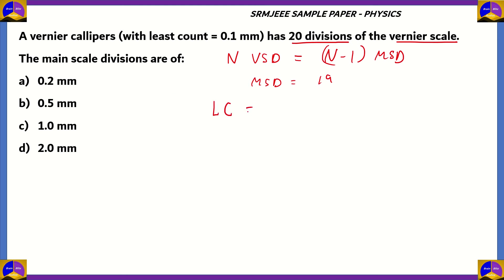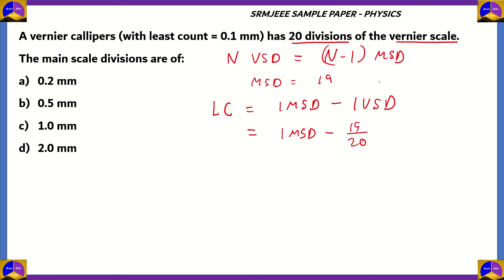The least count (LC) equals 1 MSD minus 1 VSD — that is, one main scale division minus one vernier scale division. Since 19 MSD equals 20 VSD, we know that 1 VSD equals 19/20 MSD. Therefore the least count equals 1/20 MSD.